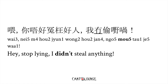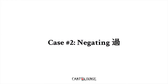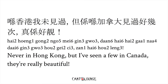And number 2 — negating 過. We have a choice here of using either 無 or 未. This is a mini two-line dialogue talking about rainbows. One guy's asking, have you seen any rainbows before? And the other guy responds: 喺香港我未見過,但是在加拿大見過好幾次,真係好靚 — never in Hong Kong, but I've seen a few in Canada, they're really beautiful. So 未見過 — I haven't experienced seeing a rainbow in Hong Kong yet. Or you can say 無見過 if you don't want to express 'yet.' Fairly straightforward.